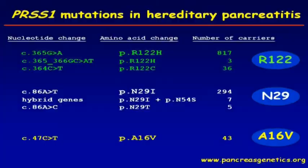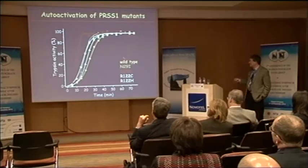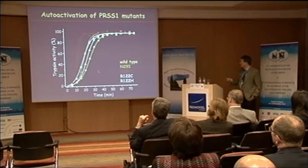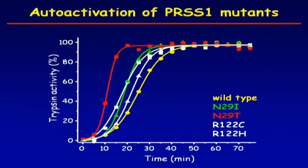Focusing on the common mutations: R122 typically changed to H, N29 typically changed to I; there are rare mutations where R122 is changed to C or T. A16V is an important one because it has much lower penetrance as Heiko showed, making it a milder PRSS1 variation. But if you take the strong mutations and just test activation, you don't see much of a difference — the mutations stimulate activation only a tiny bit.